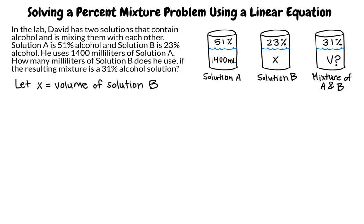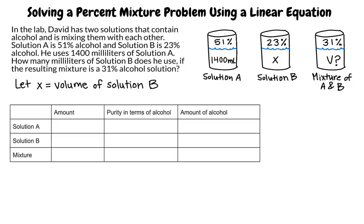Our next step is to build an organizational table. Because we are mixing two solutions to create a mixture, let's label the cells in the first column as solution A, solution B, and mixture. Since we know the amount of solution A, and we define the amount of solution B as x, we can say that the amount of the mixture will be the sum of the amounts of solutions A and B, or 1400 plus x.